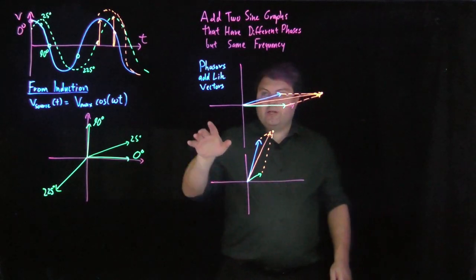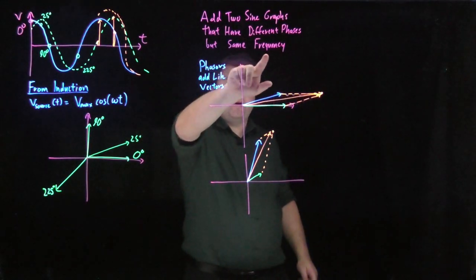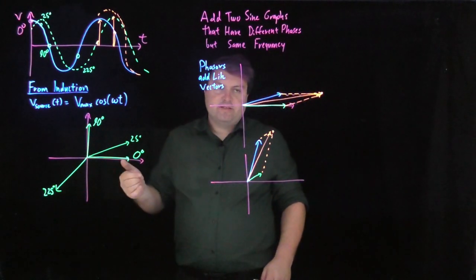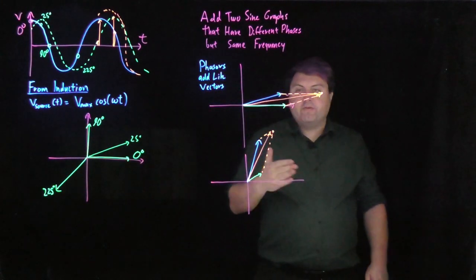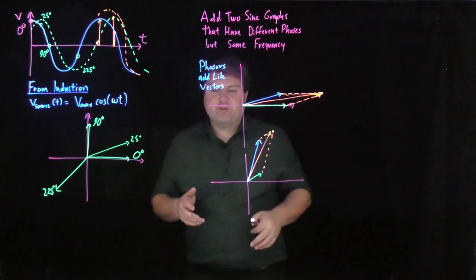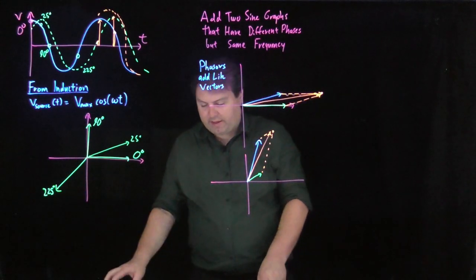So, for our AC circuits, we're going to add phasers, because all of our objects are going to have the same frequency, but they're going to have different phases. Luckily for us, most of the different phases are going to be 90 degrees apart. So, it's going to be a lot easier than these examples, but we want to show what's going on with that.